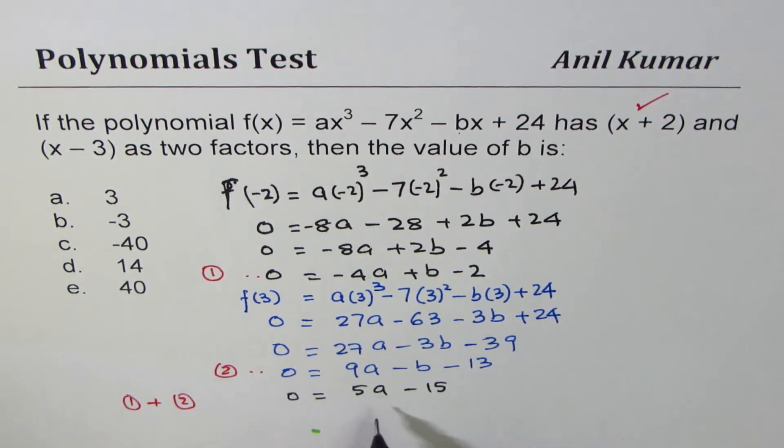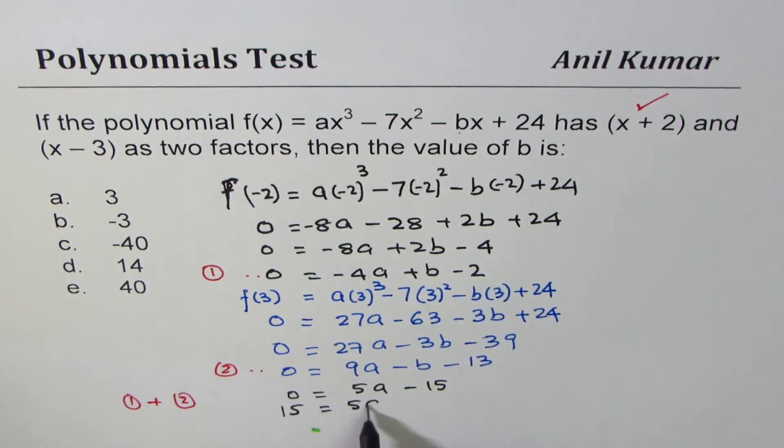plus b and -b is 0, and -2 - 13 gives us -15. Now, we can solve for a from here, bring 15 here, 15 = 5a, and that gives us a = 15/5,